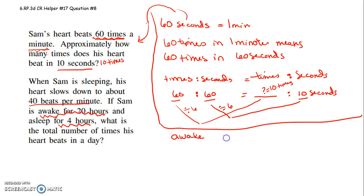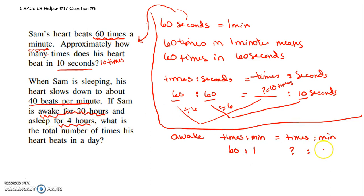When he's awake, if we set up times it beats per minute equals times it beats per minute — we know it beats 60 times in one minute. We're wondering how many times in 20 hours. He must have been doing a marathon of gaming online or something. 20 hours is a long time to be awake. So I compare minutes — in 20 hours, there's not just 20 minutes. So let's convert hours to minutes.